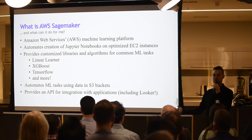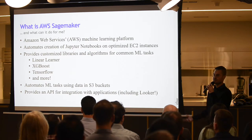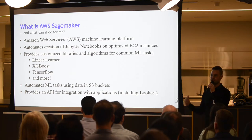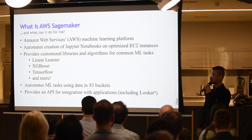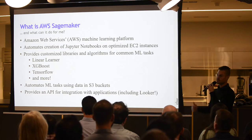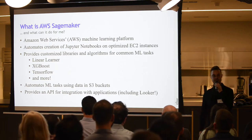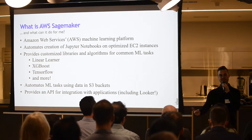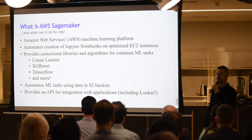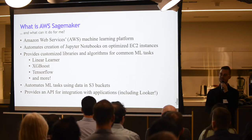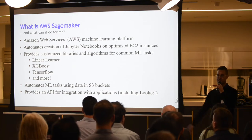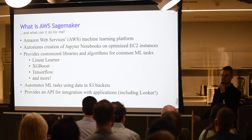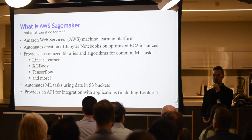The most important part for us is that SageMaker provides an API for integration. I can call the API, send data down to S3, and say: SageMaker, train a model on this — here's my target, here's my type of classification or regression. It puts together a trained model, lets me know when it's done, and then I can run inference on top of that and put together predictions.